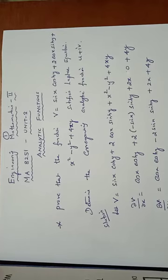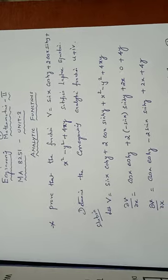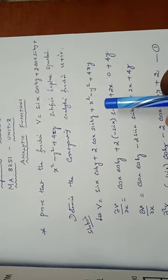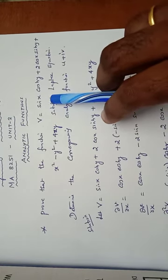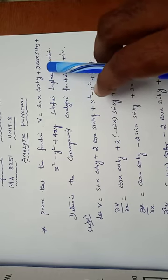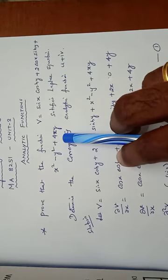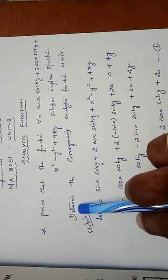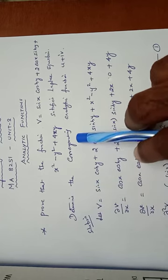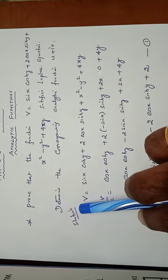Engineering Mathematics 2, MA8251, Unit 3, Analytic Functions. Problem number 1: prove that the function v equal to sin x into cosh y plus 2 cos x into sinh y plus x square minus y square plus 4xy satisfies the Laplace equation, and then determine the corresponding analytic function u plus iv.